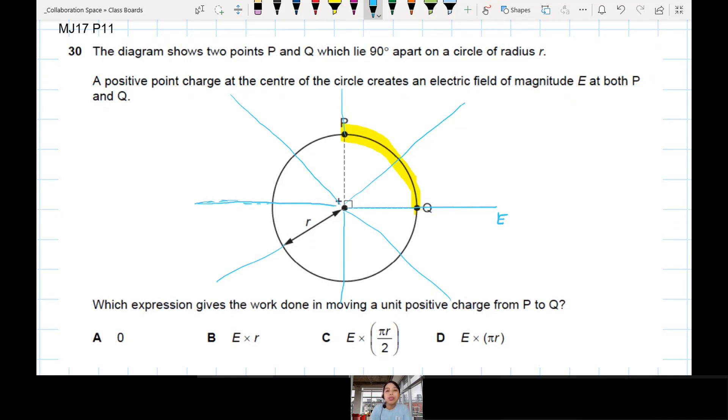One thing to note is, point charges, the field is like this, right? Radial field emanating out, positive.